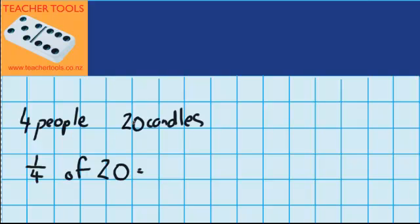I want to find out what one quarter of 20 will be. The 20 are the 20 candles, the 4 are the 4 people who have to share the cake, and I've got one up here because I'm interested in how many candles one person will get.